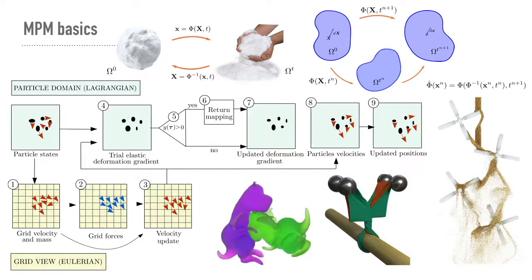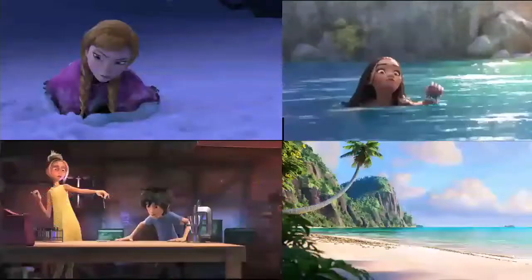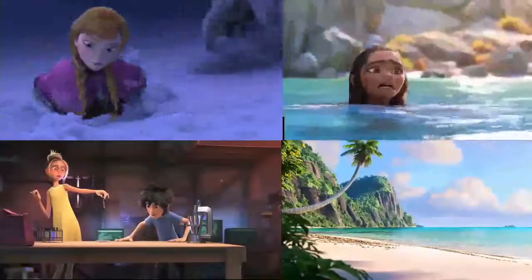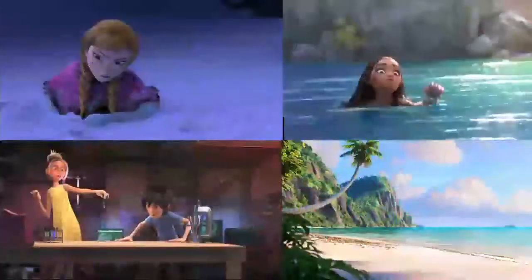I'll skip the full MPM algorithm details since it takes a whole semester — I teach a graduate class on the entire MPM. The key takeaway is that through interpolating physical quantities back and forth between the two representations, MPM can handle the interaction between any solid and fluid materials implicitly. This is especially common for granular media like sand, mud, snow, and fluids like water. Through collaborations with Disney, MPM simulations are becoming more and more common on the big screen.